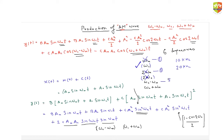ωC plus ωM and ωC minus ωM are near ωC because ωM is very small. So you are subtracting or adding a very small frequency to the high frequency ωC. So the band pass filter will only allow ωC, ωC minus ωM, and ωC plus ωM. That's how you generate these sidebands. I hope you have understood this.